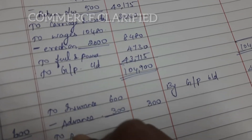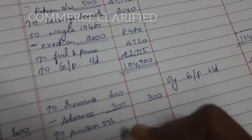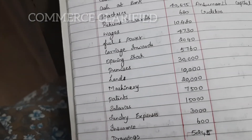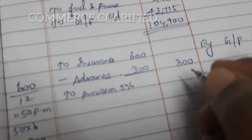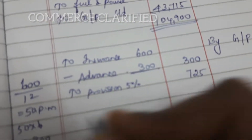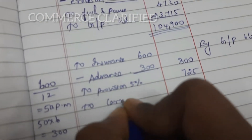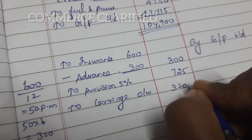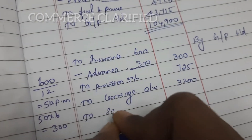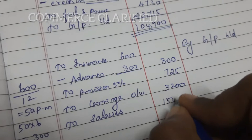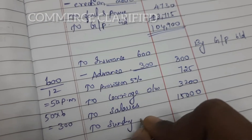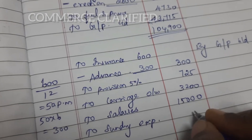Next, provision for doubtful debts: 5% on sundry debtors. Sundry debtors are 14,500, so 5% of 14,500 equals 725. Next, indirect expenses: carriage outwards 3,200. Next, salaries — salaries outstanding: 15,000. Next, sundry expenses: 3,000.